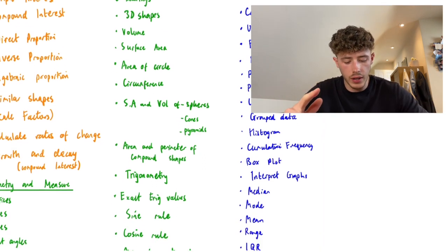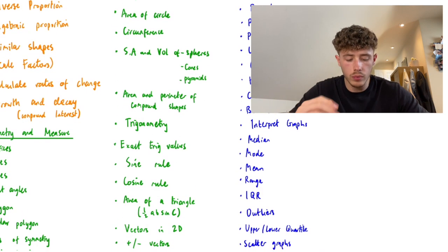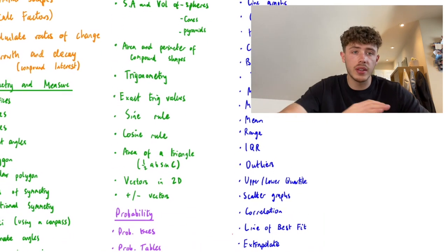Trigonometry, exact trig values, sine rule, cosine rule - higher only. Area of a triangle using the half ABC sin C.